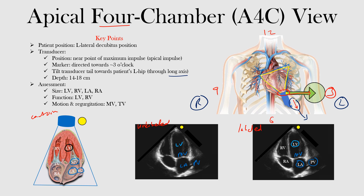We also have the right side of the heart — you can see the right atrium and the right ventricle. Here it is: right atrium, right ventricle. And we know between them we have the tricuspid valve, which would be this one here. So multiple ways that you can view it — we're seeing the four chambers, and we can also see the valves between them: the mitral valve and the tricuspid valve.